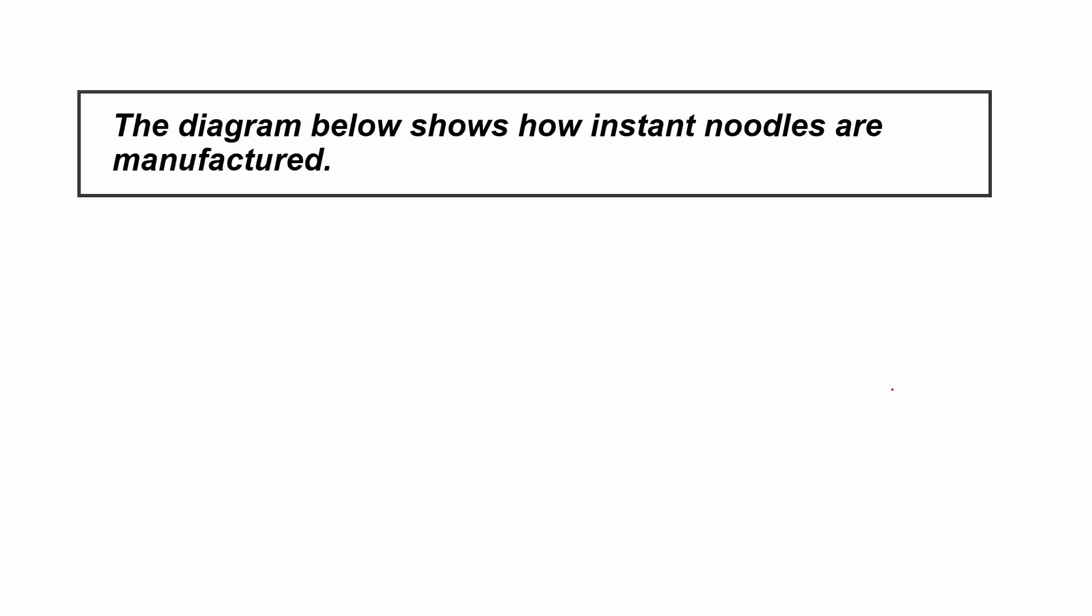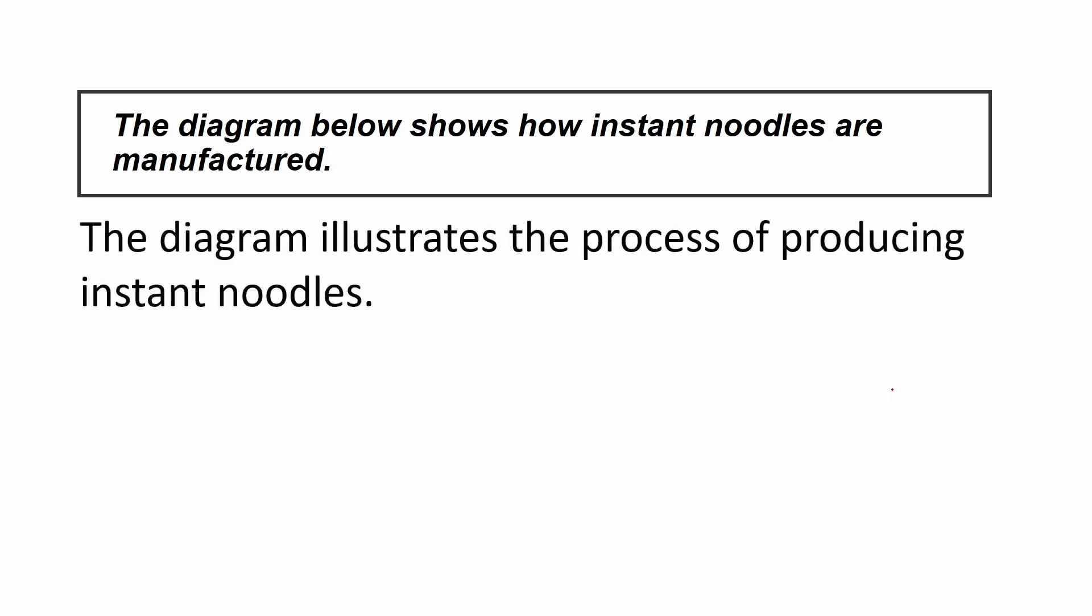Now it's time to write. The first thing to write, as usual, is the paraphrase. This is my paraphrase. The diagram illustrates the process of producing instant noodles. So as usual, I deleted the word below because there is nothing below my writing. Instead of shows, I used illustrates. And instead of how instant noodles are manufactured, I used the process of producing instant noodles.